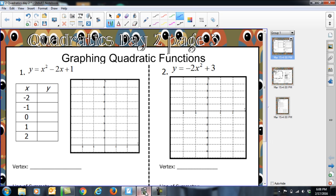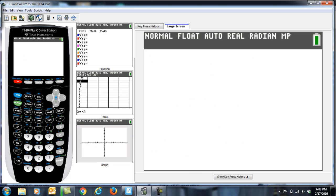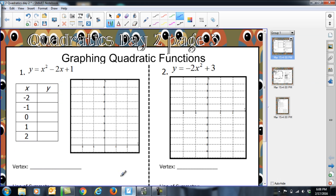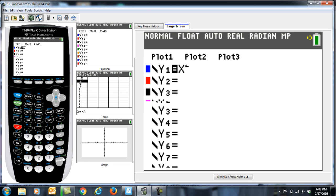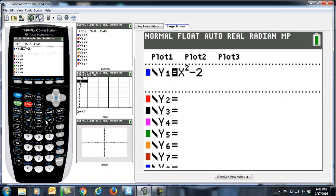So we're going to grab our calculator, and in y equals, we're going to type in that equation, x squared minus 2x plus 1. Then we're going to go to second and graph so we can look at our table.